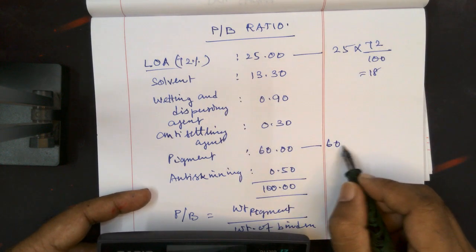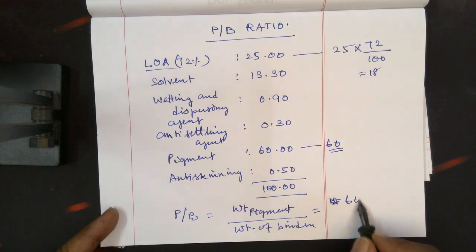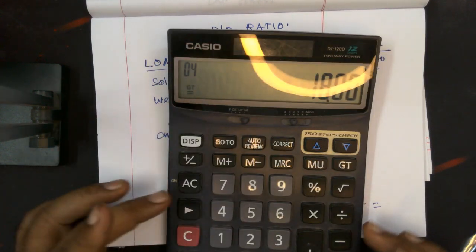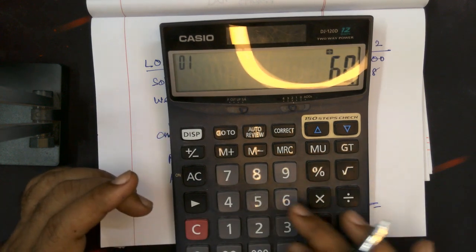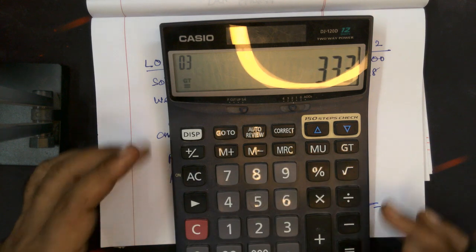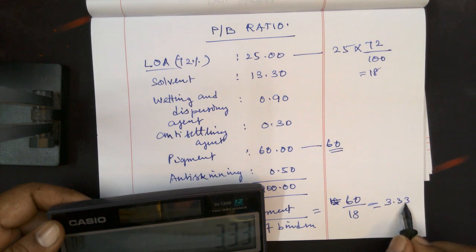And this is 60, so you can calculate 18. That is 60 divided by 18. So the pigment-binder ratio is 3.33 to 1.